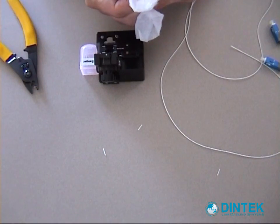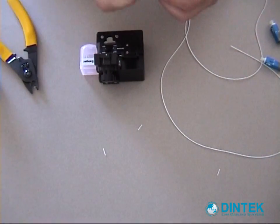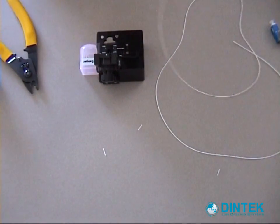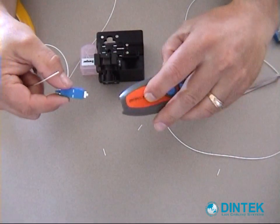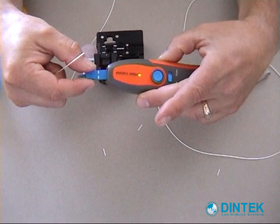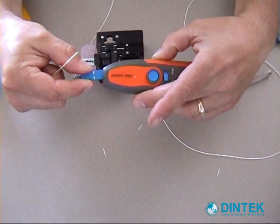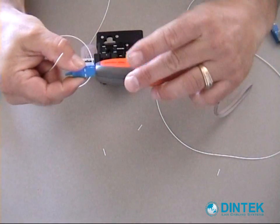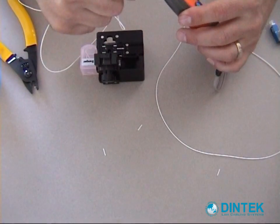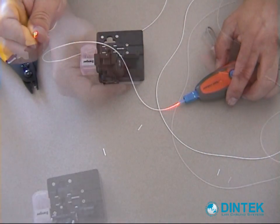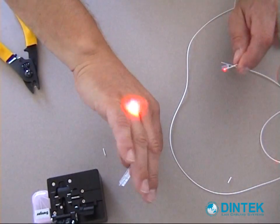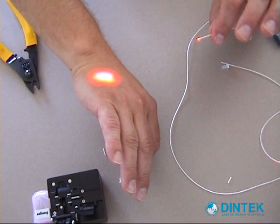So we'll take our fiber and we're going to give it a good clean with some alcohol wipes. Take one end of our fiber and we'll put it into the fiber checker. And you can see the light coming through the fiber there.